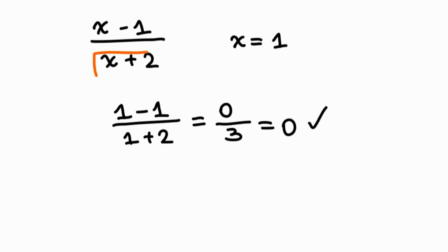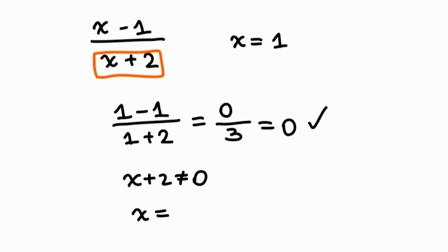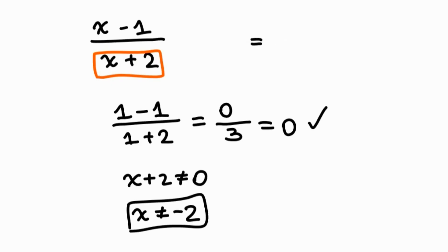But you do need to set restrictions on the denominator. Looking at x plus 2: what value of x will make this denominator equal to 0? Negative 2. We set x plus 2 cannot equal 0, therefore x cannot equal negative 2. So our restriction is x cannot equal negative 2.